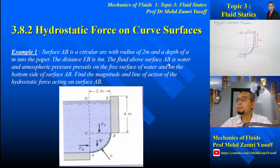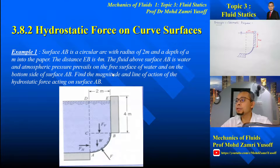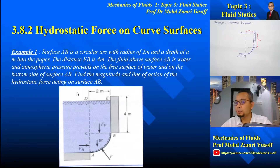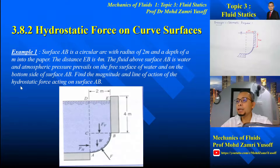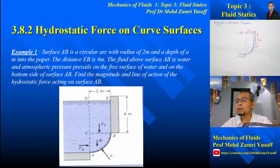The fluid above surface AB is water, with a density of 1000 kg/m³. Atmospheric pressure prevails on the free surface of the water and on the bottom side of surface AB — so both sides are open to atmosphere. We need to find the magnitude and the line of action of the hydrostatic force acting on surface AB.